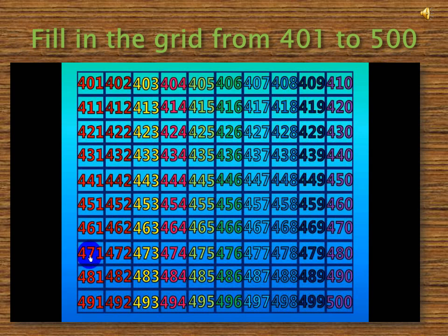We start from 401, then we write 402, 403, 404, 405, 406, 407, 408, 409, 410. We see that we change the number that is in the one's place.